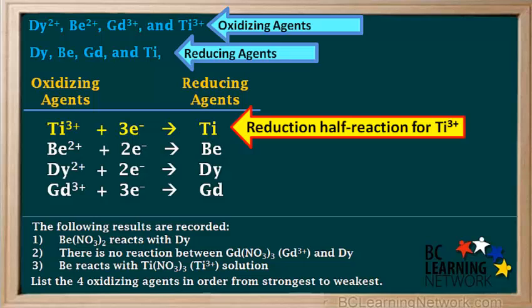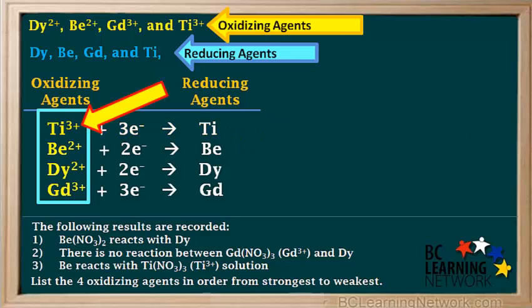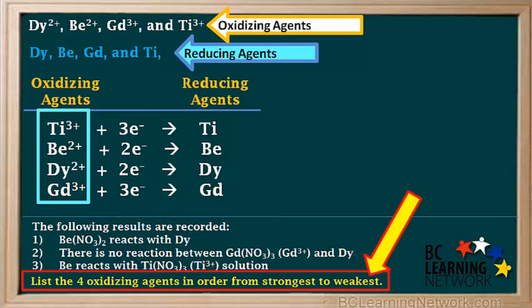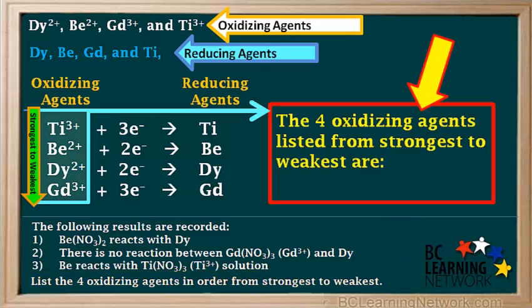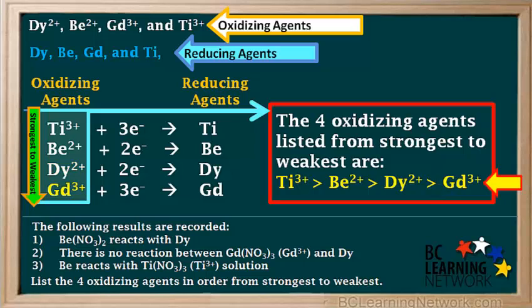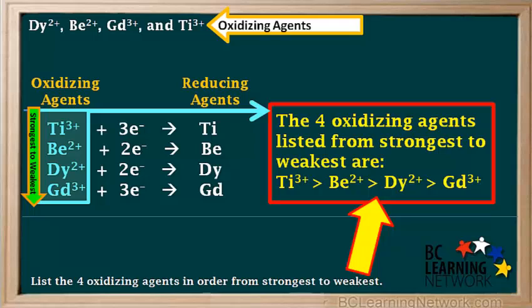We can now complete the reduction half reaction: Ti3+ + 3e⁻ → Ti metal. Focusing on the four oxidizing agents on the left side of the table — like the big reduction table, the highest oxidizing agent on the left is the strongest. So Ti3+ is the strongest of the four oxidizing agents, and GD3+ is the weakest. Listed from strongest to weakest: Ti3+ > BE2+ > DY2+ > GD3+.